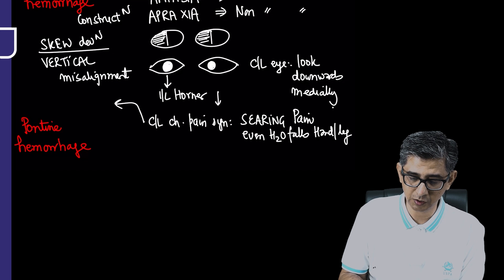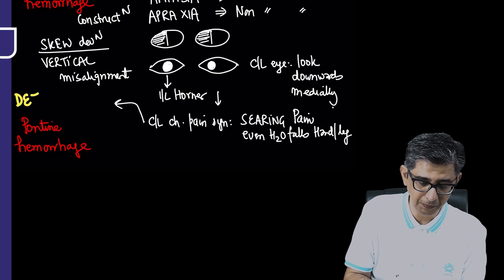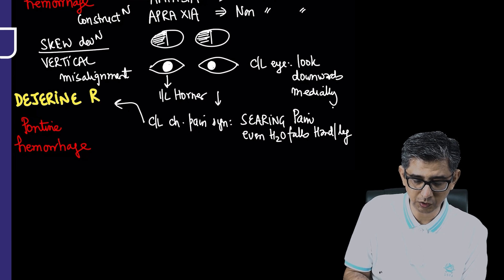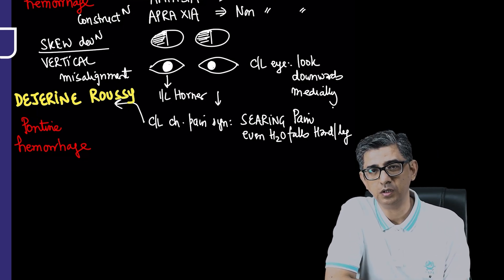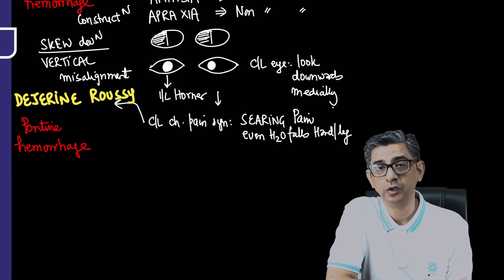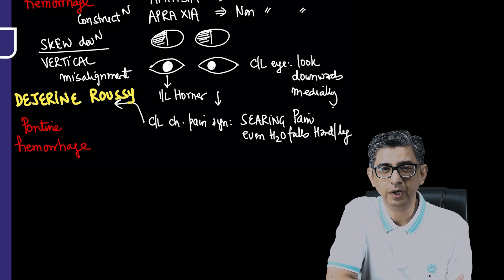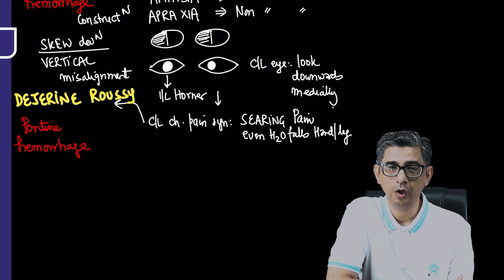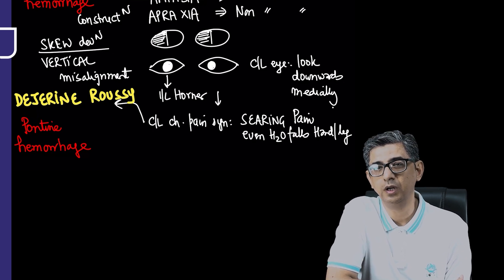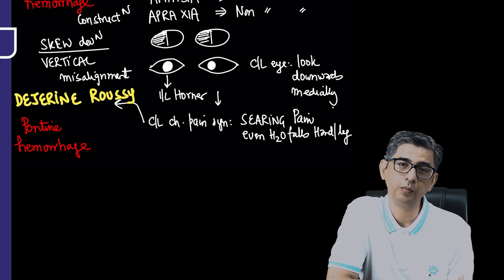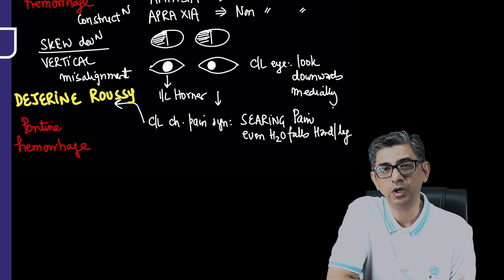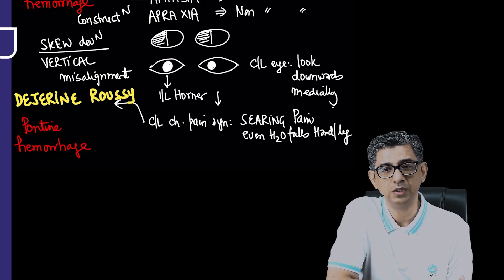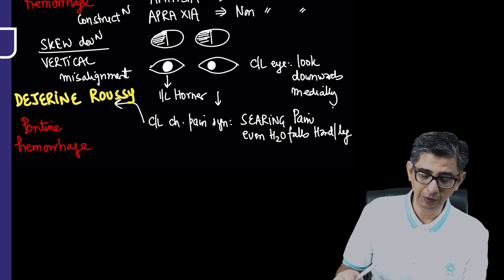This presentation is regularly read as Dejerine-Roussy syndrome. Don't mix this with Dejerine-Sottas, which is hereditary motor sensory neuropathy, or Dejerine syndrome, which is medial medullary syndrome with anterior spinal artery involvement.